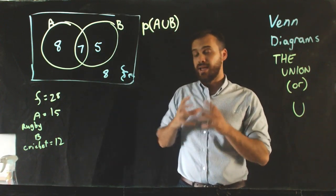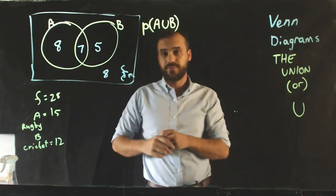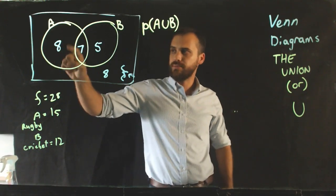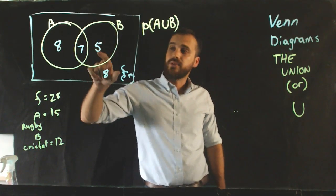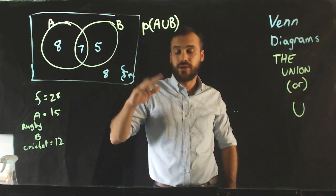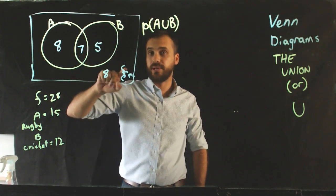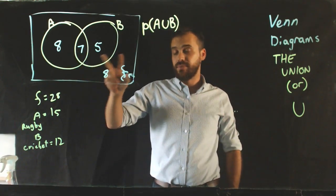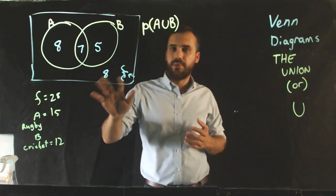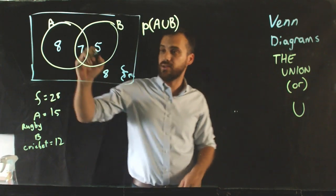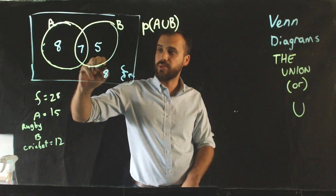Now, if I ask the question, hands up if you play cricket or rugby. Quite a few people are going to put up their hands. The eight people in here that just play rugby are going to put up their hands, because they do play cricket or rugby. The five people here are also going to put up their hands, because they play cricket or rugby. But importantly, these people here are going to put up their hands. The people that play rugby and cricket. They will also put up their hands if I say, who plays rugby or cricket? They'll put up their hands. There are only eight people in this group who aren't going to put up their hands. And that means that the probability of A union B is equal to the entire circular part of our Venn Diagram.